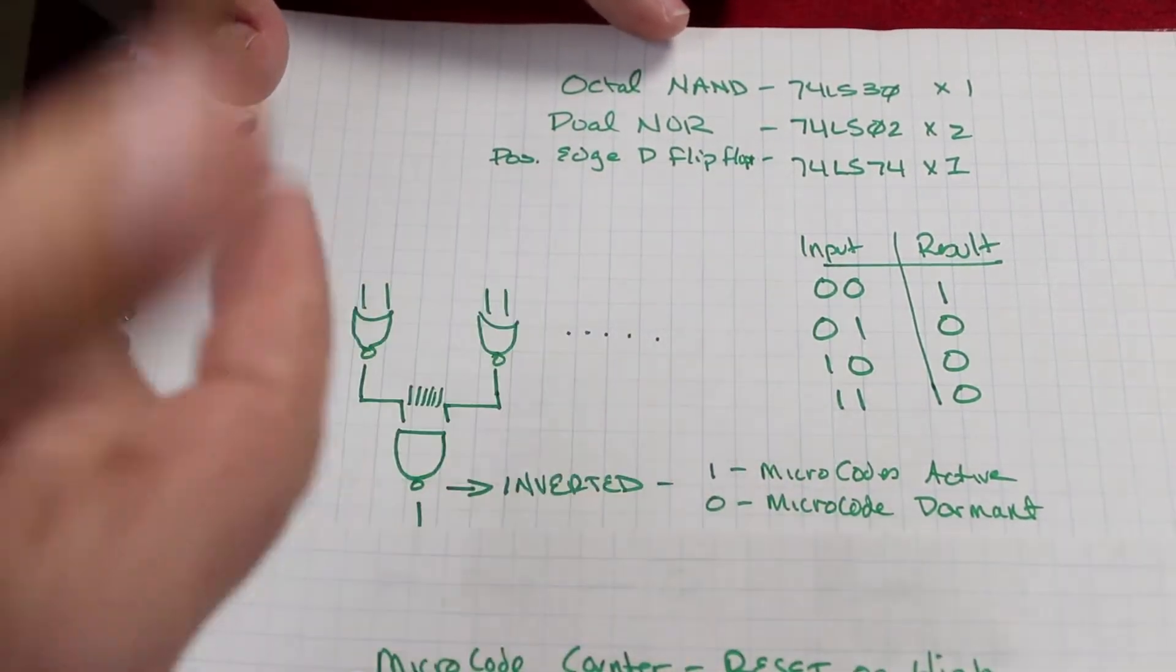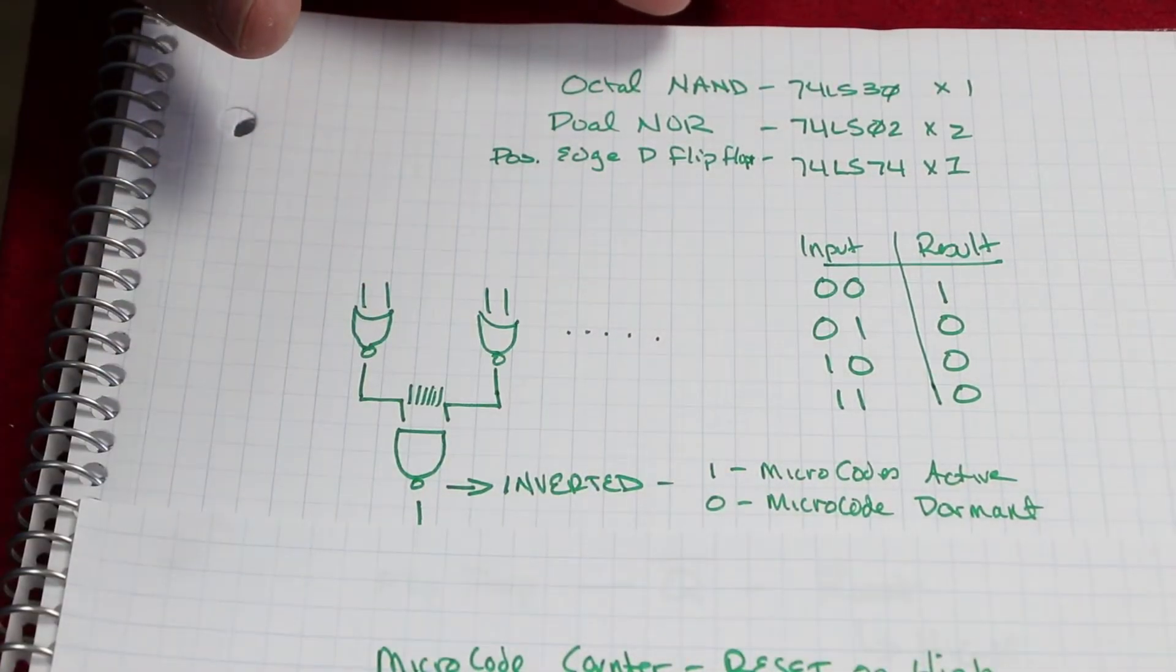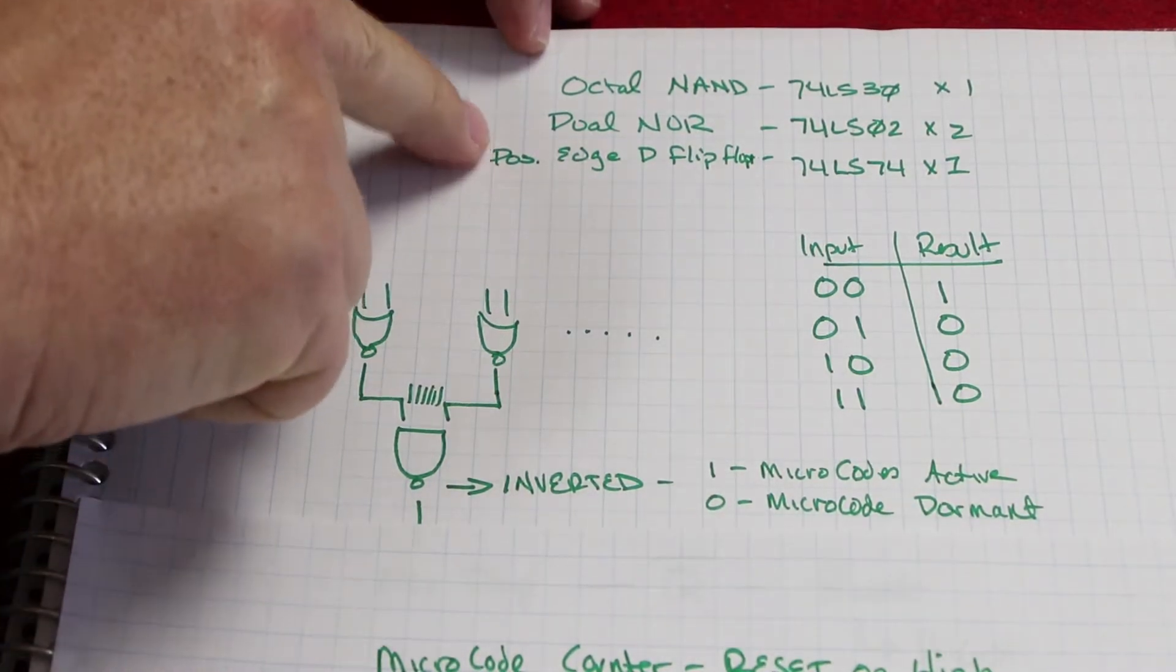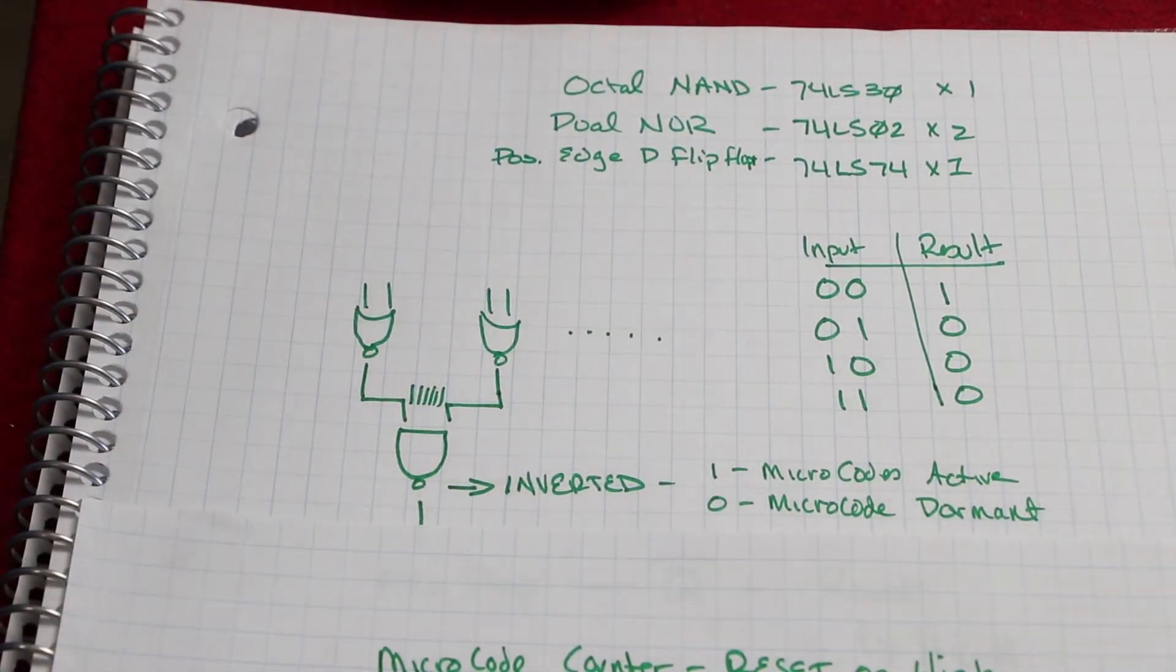Now, what we do is we just run that to an inverter, right? Not quite. The problem with this that I ran into is that if you don't buffer it in some way, and you'll recognize a chip here in just a second...